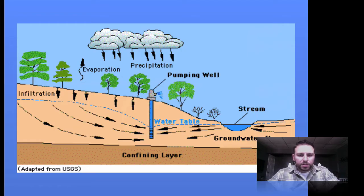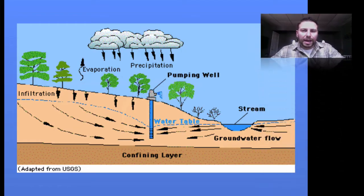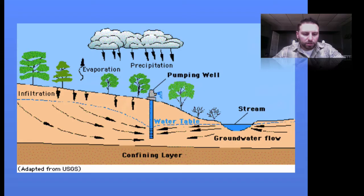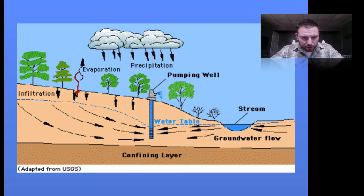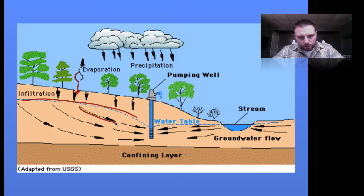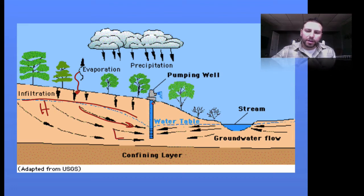This next diagram looks outward a bit, showing certain land features, the water table, and groundwater flow — it's also a nice picture of the water cycle. We can see water infiltrating into the ground and hitting the water table, which follows the topography of the land, flowing from high to low.